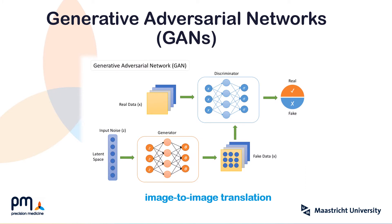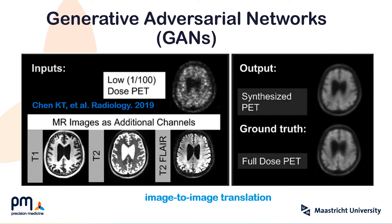Lately, Generative Adversarial Networks for image-to-image translation have been reported. This model often consists of a generator network focused on image synthesis and a discriminator network centered on discrimination. The two networks are trained simultaneously and challenge each other to achieve high-quality images from low-dose acquisitions. More recently, Chen Group has shown that high-quality PET images can be generated using deep learning methods starting from acquired MR images and ultra-low-dose PET data.